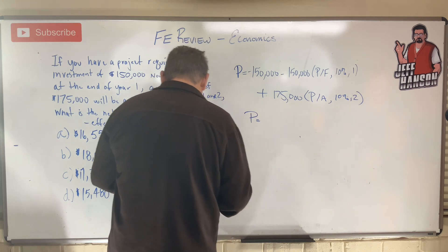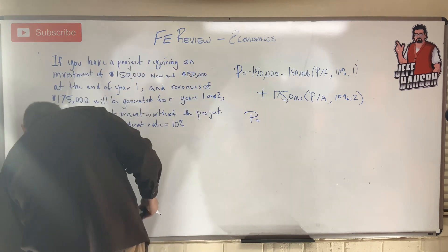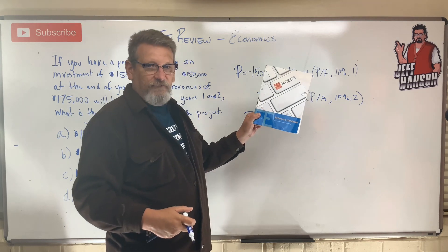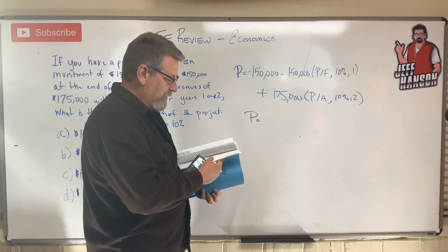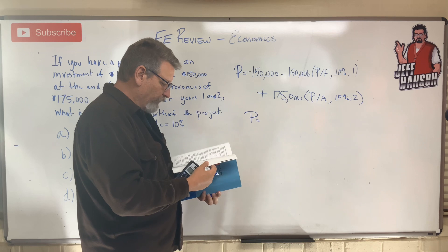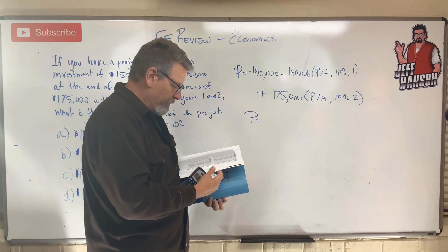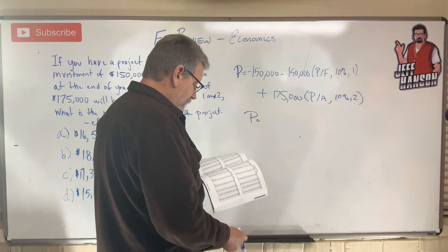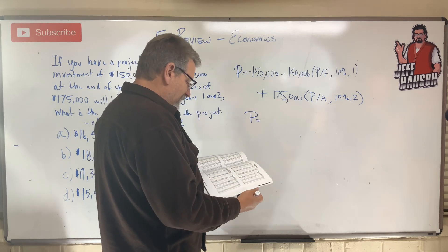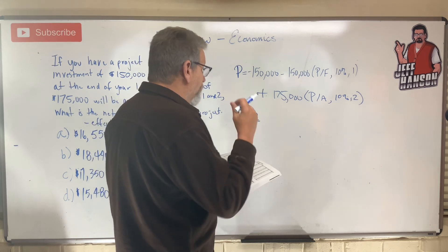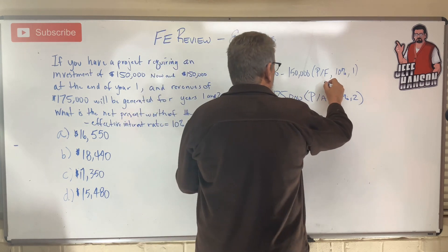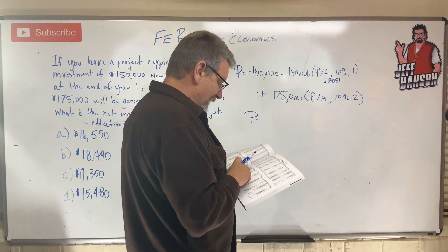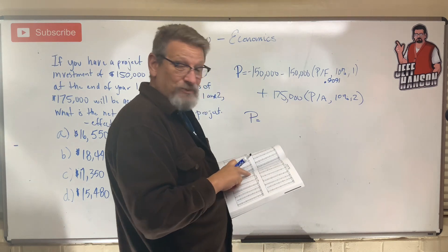We're going to need our handy-dandy FE reference book. Let's find the interest tables — we want the 10% table. There's 10% right there. For one year, I get P given F = 0.9091. And then P given A = 1.7355.